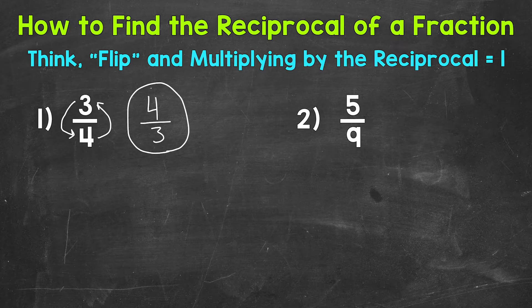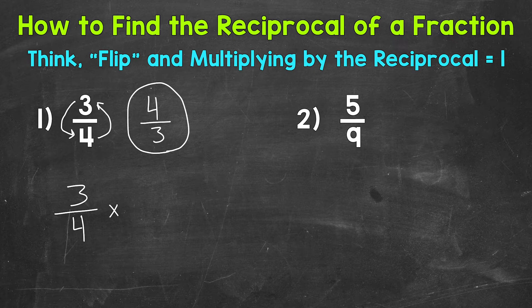Now let's multiply our fraction by that reciprocal to show that we get 1 when multiplying by a reciprocal. So 3 fourths, our fraction, multiplied by the reciprocal of 4 thirds.